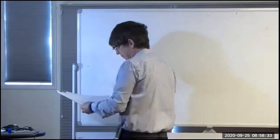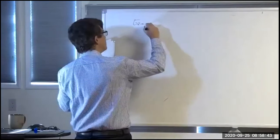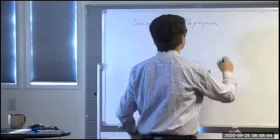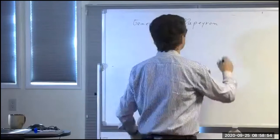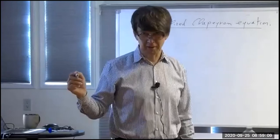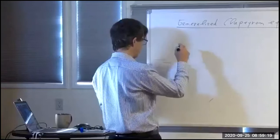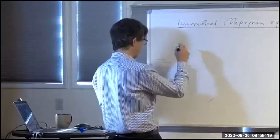For the last portion, I want to do something I'm particularly proud of: the generalized Clapeyron equation. It's not found in most books but is inspired by existing work. The Clapeyron equation always appears in textbooks in the chapter on one-component systems, but it's much more generally useful — you can apply it to any set of work variables.